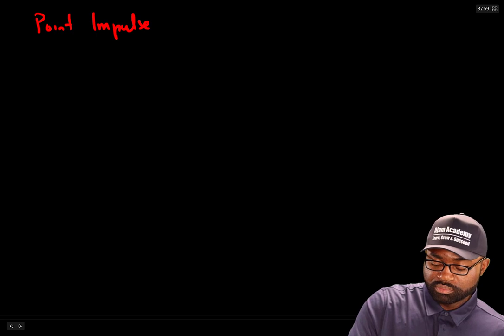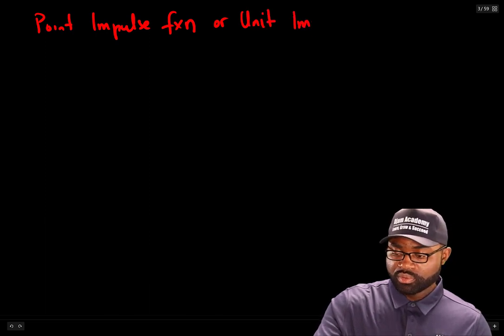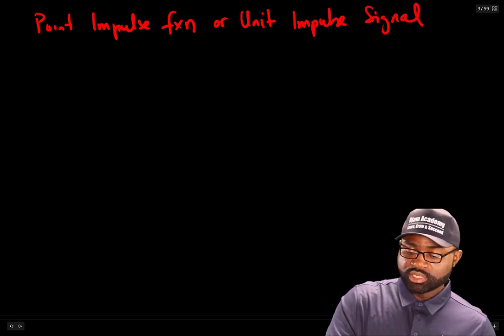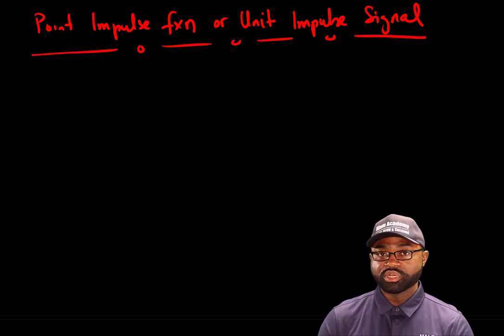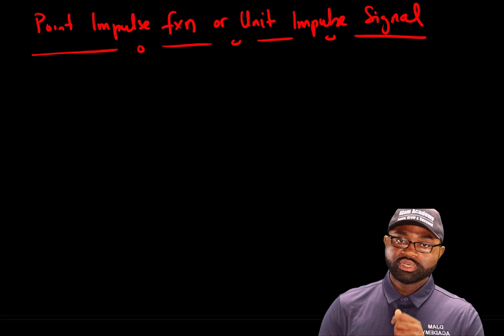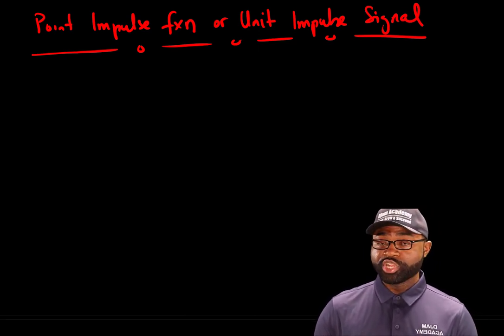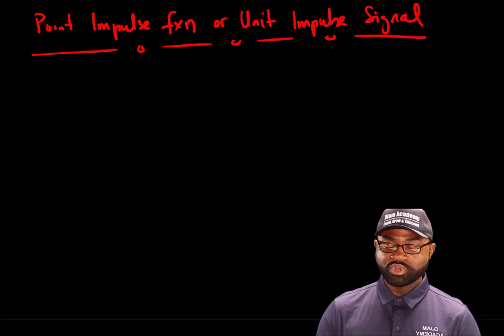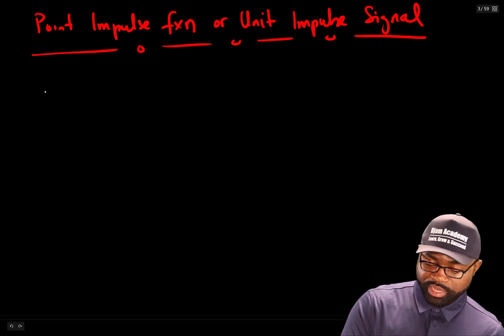The next function we will define is what I call the point impulse function, or unit impulse signal. In medical imaging physics, it is important to model a point source in the characterization of the resolution of an imaging system. The question is: how can we model a point source? To model a point source, we use what we call the point impulse function, or unit impulse function.